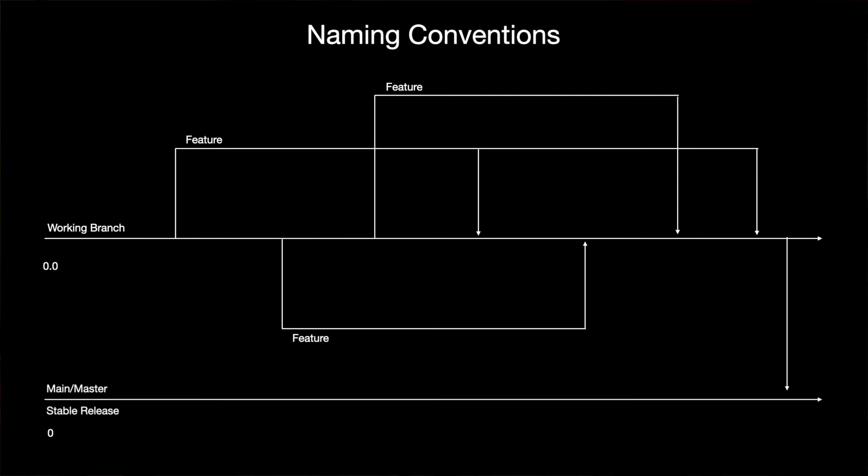Now let's talk about some naming conventions you can use within your branches. We still have our main and working branches, but we also have these feature branches. I will name these based on the feature they are trying to implement, but I also want to put in some version numbers. I like to use a parent-child relationship between the branches. When I first create the repository, I'll create the master branch and the working branch. The master branch when first created with no code in it will be version 0, so the working branch will be 0.0. Once I merge some features into the main branch, I will name that 1, and the working branch will be 1.0. These names are being applied to the individual commits within any branch.